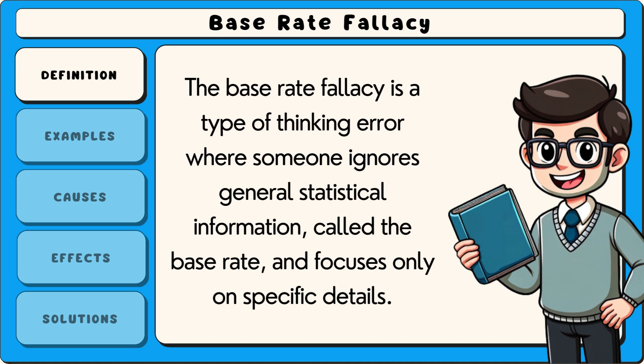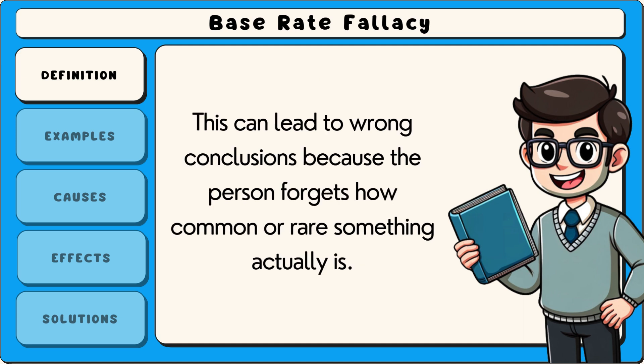The base rate fallacy is a type of thinking error where someone ignores general statistical information, called the base rate, and focuses only on specific details. This can lead to wrong conclusions because the person forgets how common or rare something actually is.